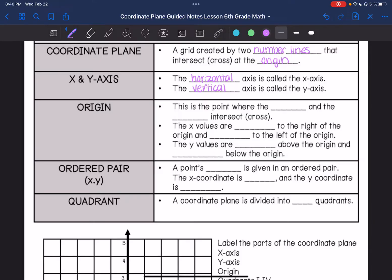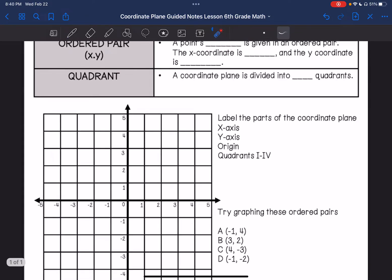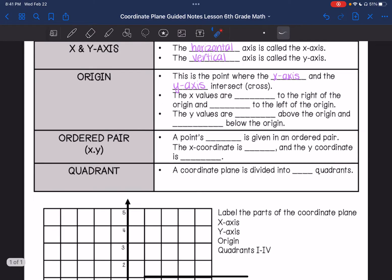The origin is the point where the x-axis and the y-axis intersect or cross. So that is right here. We will talk about ordered pairs in just a second, but the ordered pair for the origin is 0, 0.